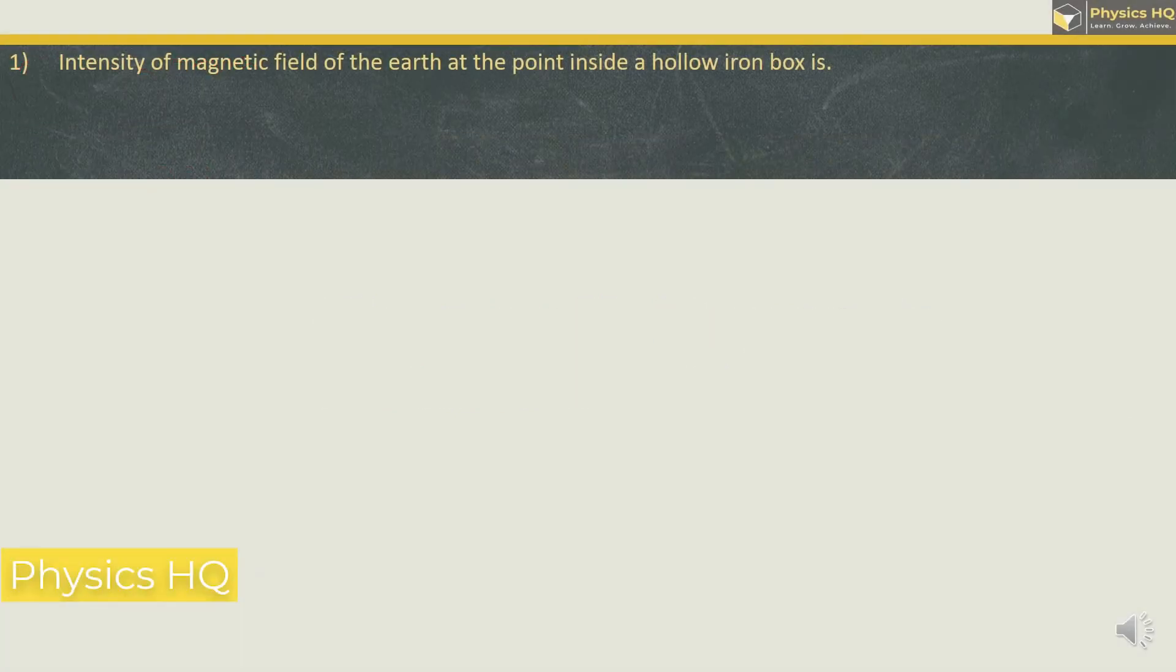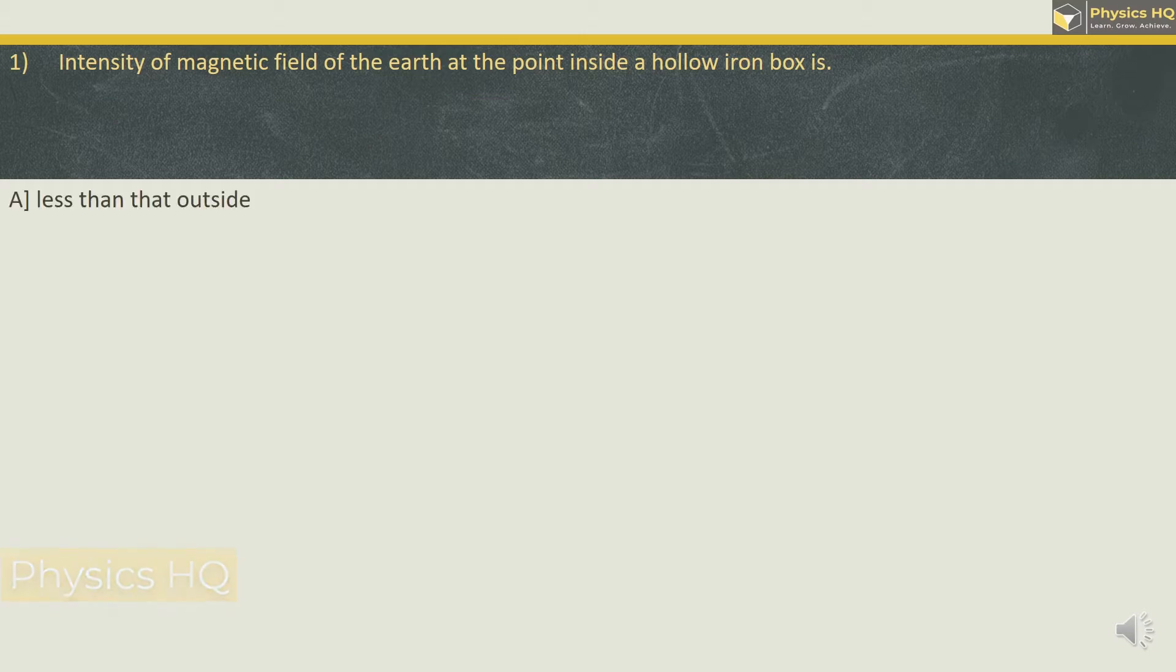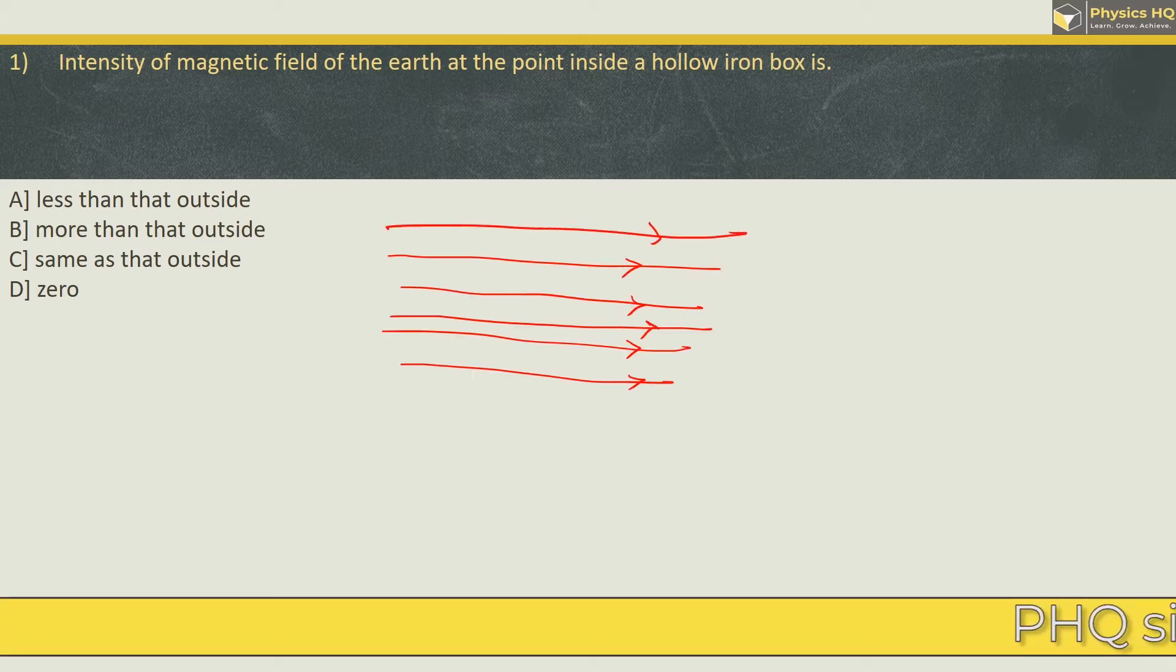Intensity of magnetic field of the earth at the point inside a hollow iron box is less than that outside, more than that outside, same as outside or zero. So whenever we have a magnetic field in air, then in that case if we place iron box, maybe of a spherical shape and this iron box is hollow...